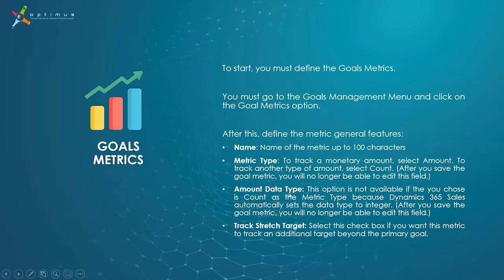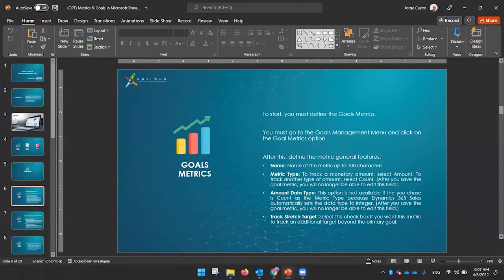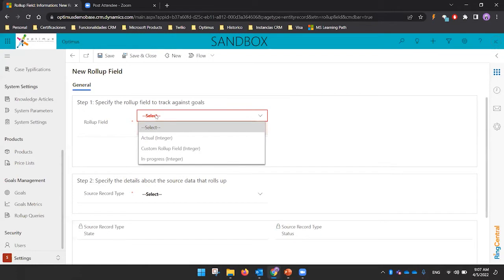The amount data type option is not available if you choose Count — it is only available if you define Amount. You can also select the 'Track Stretch Target' checkbox if you want the metric to track an additional target on the primary point. That is the configuration you need to do to define a goal metric.